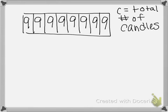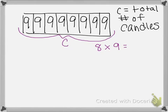Our equation I will write in purple so that we can find C. This is what we're looking for, the total number of candles. So we know that he has eight boxes with nine candles in each box as C. C equals 72 candles total.